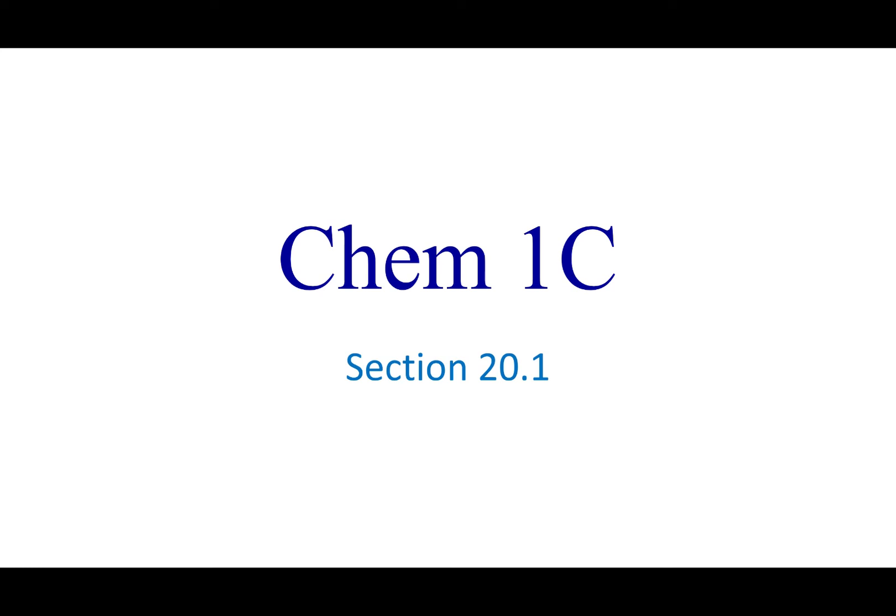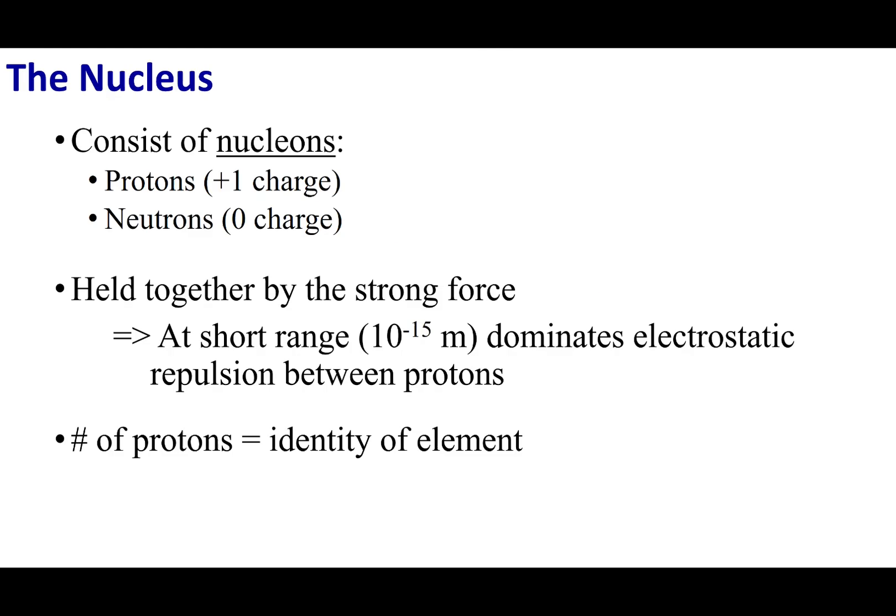Welcome to section 20.1. This is the final chapter we're going to cover in Chem 1C. What we're going to do in this chapter is talk about nuclear chemistry. This is kind of a bridge between physics and chemistry, and we're going to do a deep dive into atomic structure and what the nucleus can do.